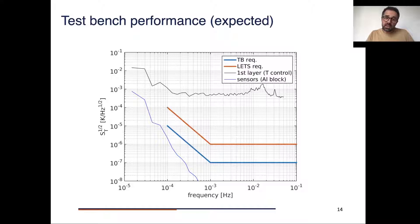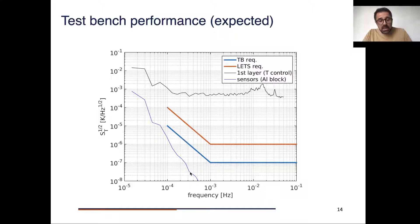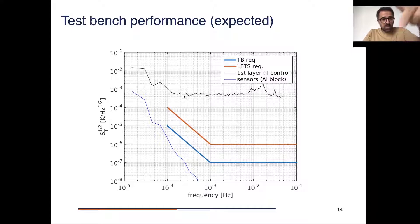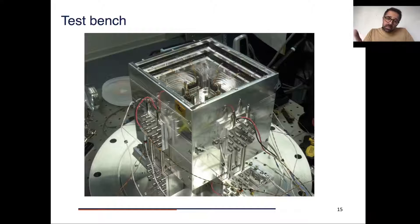In terms of the expected performance of this test bench, the test bench needs to go one order of magnitude better than our front-end requirements in order to suppress all temperature fluctuations, so that our front-end measures only its own noise. The line in blue shows the expected temperature fluctuations inside the aluminum block according to our model, assuming an environment outside in the lab. As you can see, the fluctuations expected in the inner aluminum block are well below the requirements we need to fulfill.